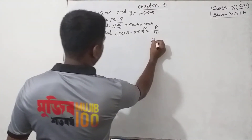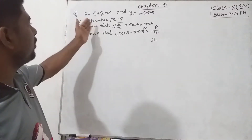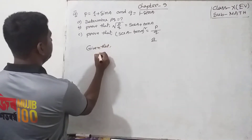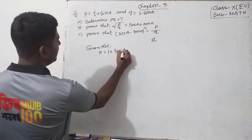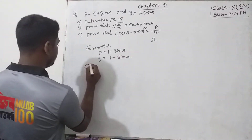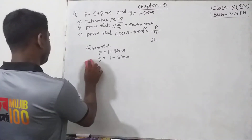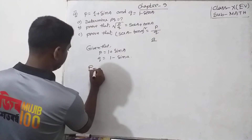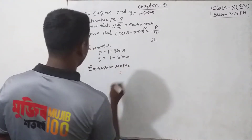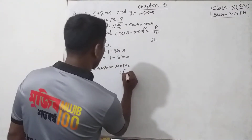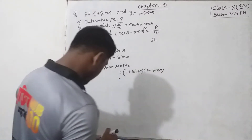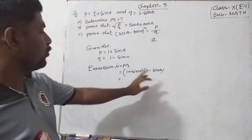Number A. Given expression: P equals 1 plus sin A, and Q equals 1 minus sin A. The given expression is PQ. Now, putting the value of P and Q: value of P equals 1 plus sin A, and value of Q equals 1 minus sin A. So PQ equals 1 plus sin A into 1 minus sin A.